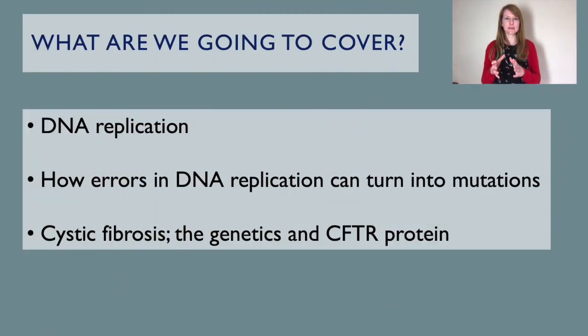Hello again, it's Fiona from the NCBE. Thank you for signing in for part two of our DNA module. I left you previously in part one having looked at the structure of DNA and RNA, and we looked at the history of DNA. We finished with Meselson and Stahl's seminal experiment showing that DNA replicated semi-conservatively. In this video, we're going to cover how DNA actually replicates, what happens when errors in replication lead to mutations, and we're going to look at the disease cystic fibrosis, which is a genetic disease caused by mutations in the CFTR gene.